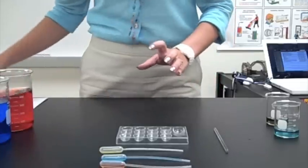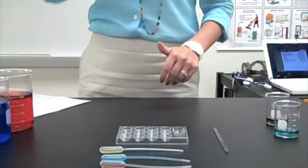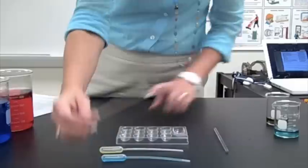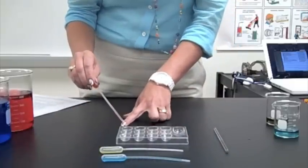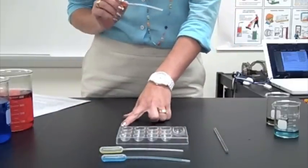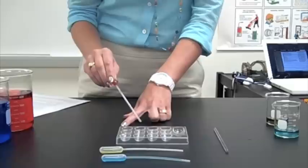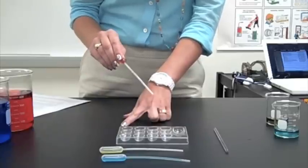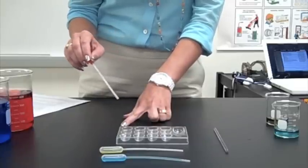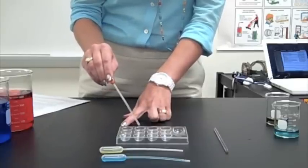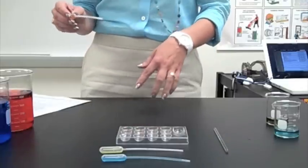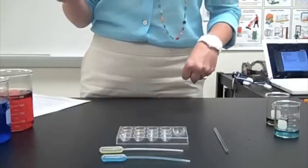It says, in steps, the red 10 drops goes in well one. Here's well one. And it says five drops in well two. And seven drops in well six. I'm going to go ahead and get a close-up of this so that you can see how they're numbered.